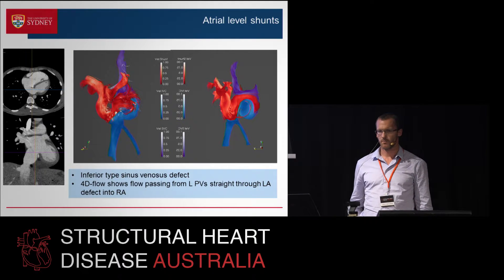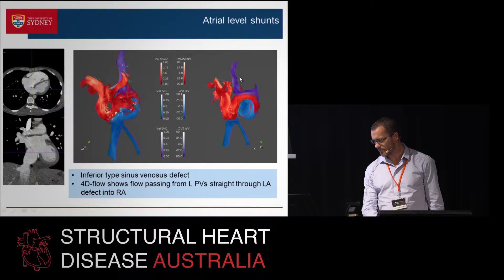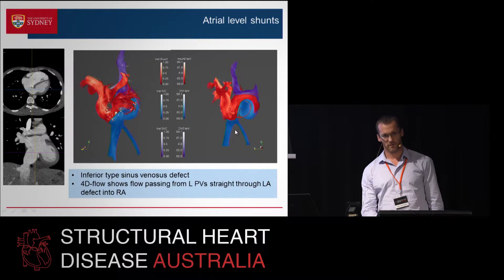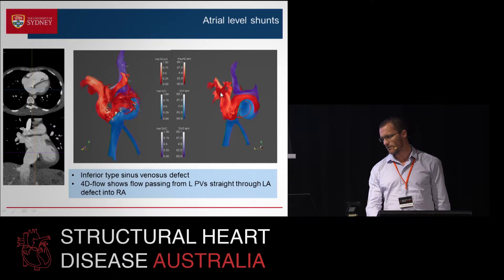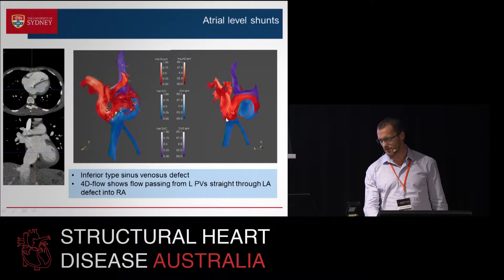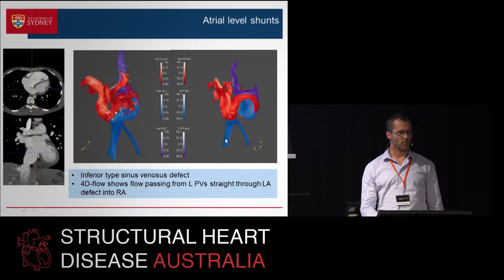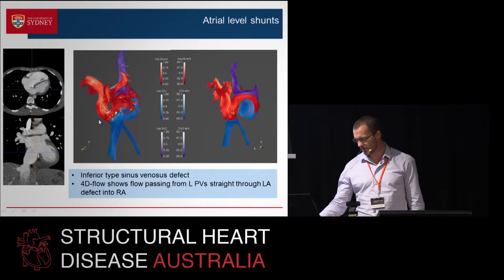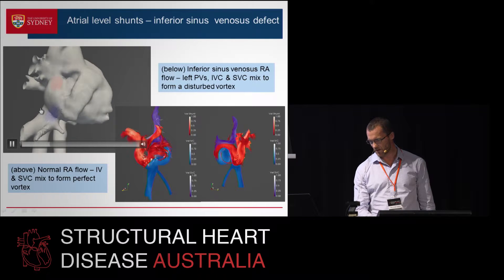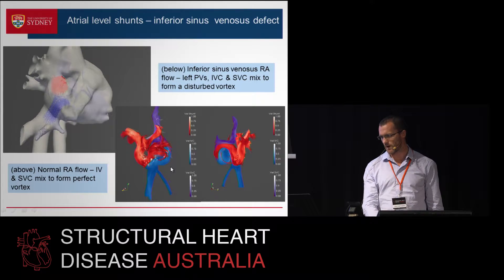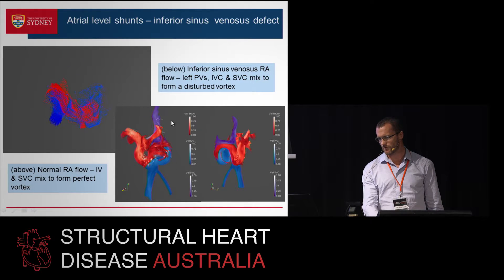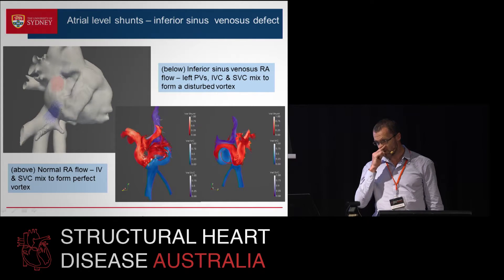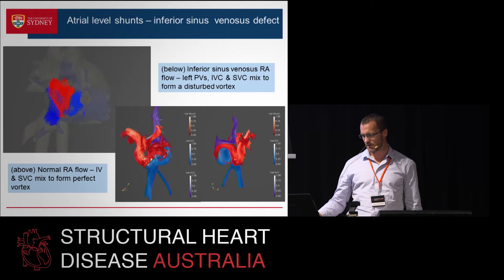We did 4D flow MRI. This picture is quite beautiful — it shows flow from the SVC coming down in purple and blue flow coming up from the IVC. They should be going into the RA and then to the RV. What you're seeing here is red flow from the right pulmonary veins going direct through the LA, through the defect and straight into the RA and mixing. So you've got three primary flows all mixing in the RA more or less directly. This is the normal right atrium flow as a comparator — the normal flow forms a nice vortex. And here we've been able to map out the differences in that flow.